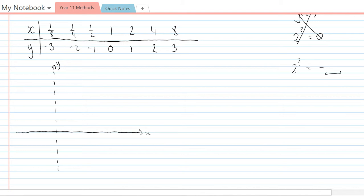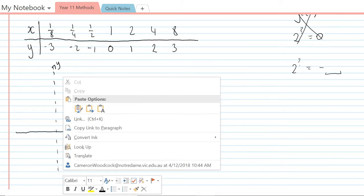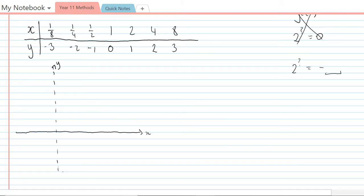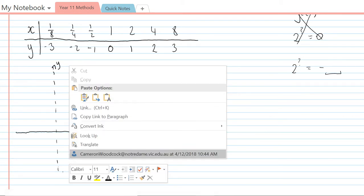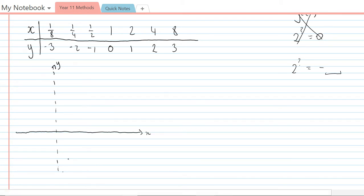When we had an x value of 1 eighth, the y value was negative 3. When we had an x value of 1 quarter, the y value was negative 2. When we had an x value of half, the y value was negative 1.